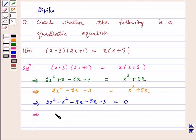On solving this, we get x² - 10x - 3 = 0.